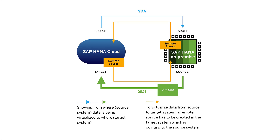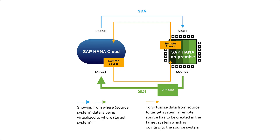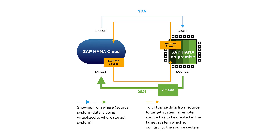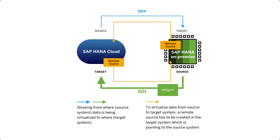In this video, I will show you how to set up the data provisioning agent to connect an SAP HANA on-premise system to an SAP HANA Cloud instance. You need to set up the data provisioning agent to create a connection between SAP HANA Cloud and SAP HANA on-premise using Smart Data Integration SDI. SDI is the best way to virtualize and replicate data from an SAP HANA on-premise database to an SAP HANA Cloud instance.